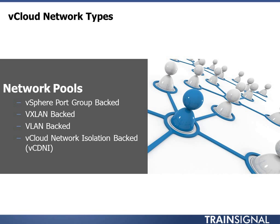The first is the vSphere port group-backed network pool. You go into the vCenter server that's running the cloud and build port groups ahead of time — for example, port groups for production, databases, or development. When you build a network pool, you direct it to those port groups. You tell it which port group to use and here are the IPs that go in it, and vCloud Director does exactly that. This is probably the most rigid and static, non-cloud-like networking because you're having to provision it all up front, and vCloud itself can't build it on its own.